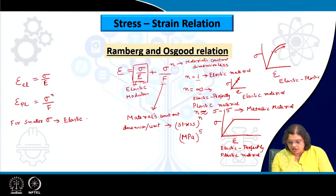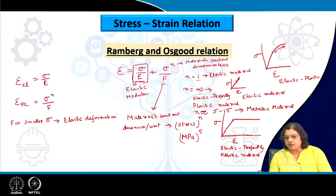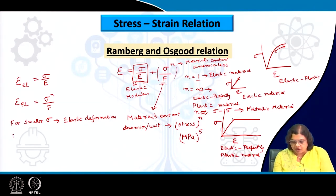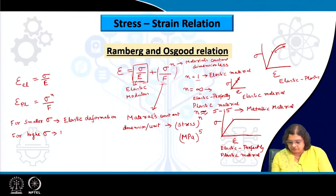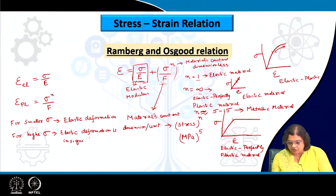When sigma increases, the second part increases to a high extent because it is raised to the power n. That makes the second part very large, and for higher sigma values the elastic part becomes insignificant and the plastic deformation dominates.